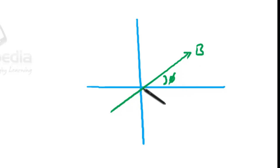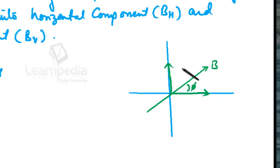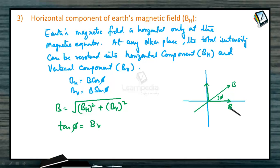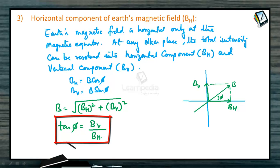This is the angle of dip. Magnetic intensity at any point is B, so the horizontal component will be B cos phi and the vertical component will be B sin phi. Therefore, B equals the square root of BH squared plus BV squared. The dip angle tan phi equals BV divided by BH, so phi equals tan inverse of BV by BH.